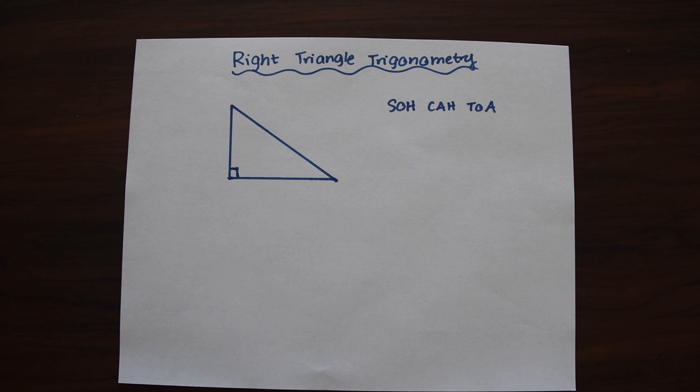So first we're going to go over what these ratios are—they're sine, cosine, and tangent. And then we're going to go over two different examples on how we use trig ratios to find missing sides and angles of right triangles.